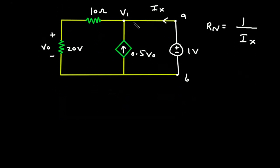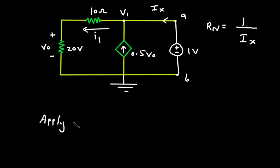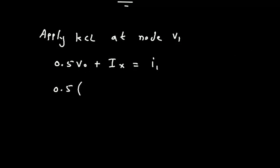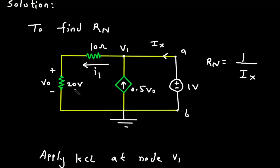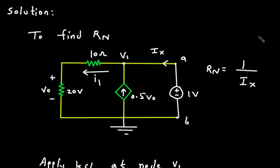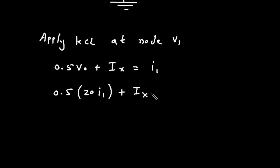Now let's assume this is node V1 and this is the reference node with 0V. Let's say this is current I1. Applying KCL at node V1, the summation of all entering currents: 0.5·VO plus Ix is equal to I1. Now this VO is 20·I1, so we get 20·I1 plus Ix. And Ix is equal to I1.